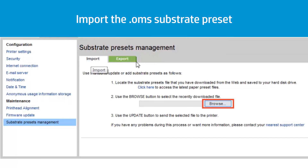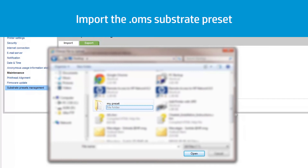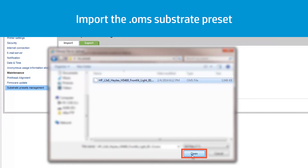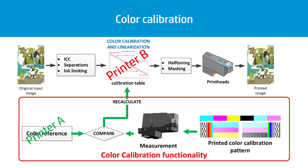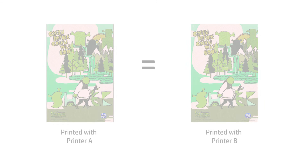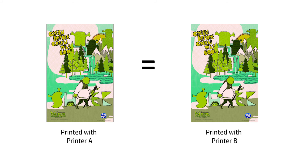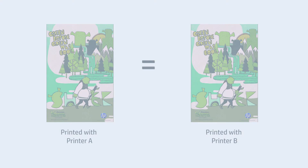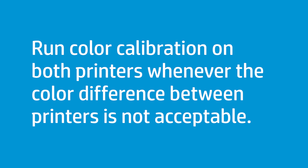From the destination printer's embedded web server, import the .oms substrate preset into the destination printer. Colour calibrate the preset in the destination printer. The conversion table will be recalculated to match the reference printer's colour reference, taking into account the status of the printheads installed on the destination printer. Now the prints from both printers should have consistent colours. If later the colour difference between printers does not match, run colour calibration on both printers to return to the original preset.